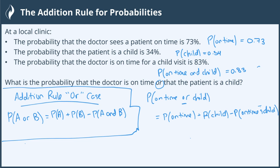So that's on time and child. So that's how I would do this without even knowing what's given to me. So I would start looking for these things within the problem, but I already wrote them down. They gave me everything I needed. All I have to do is basically plug it in now. Probability that he's on time is 0.73 plus the probability that it is a child is 0.34 minus the probability that he's on time and it's a child is 0.83. It's all there for me.